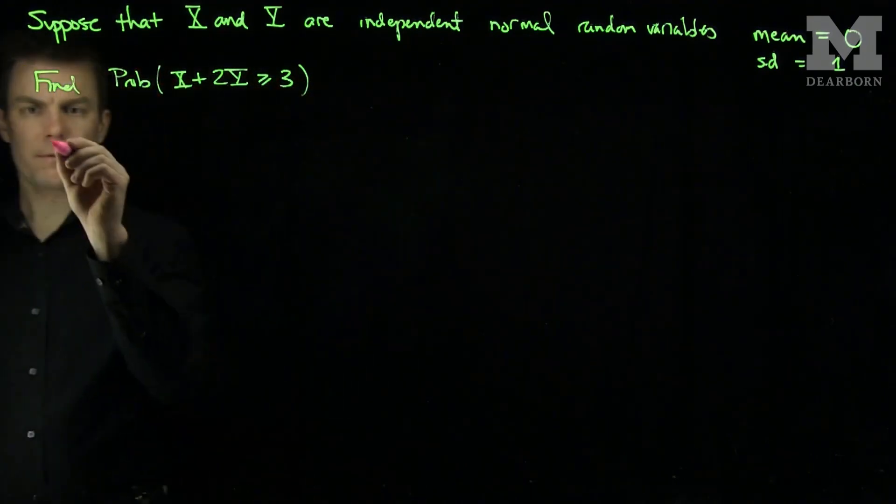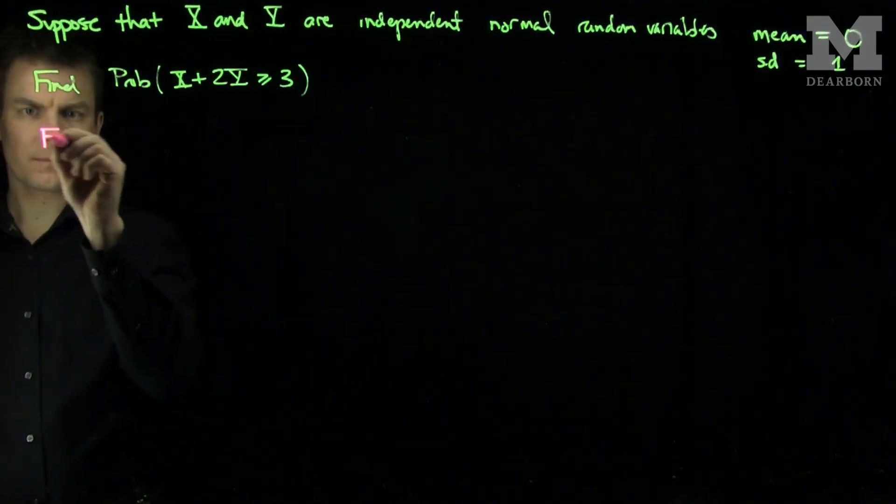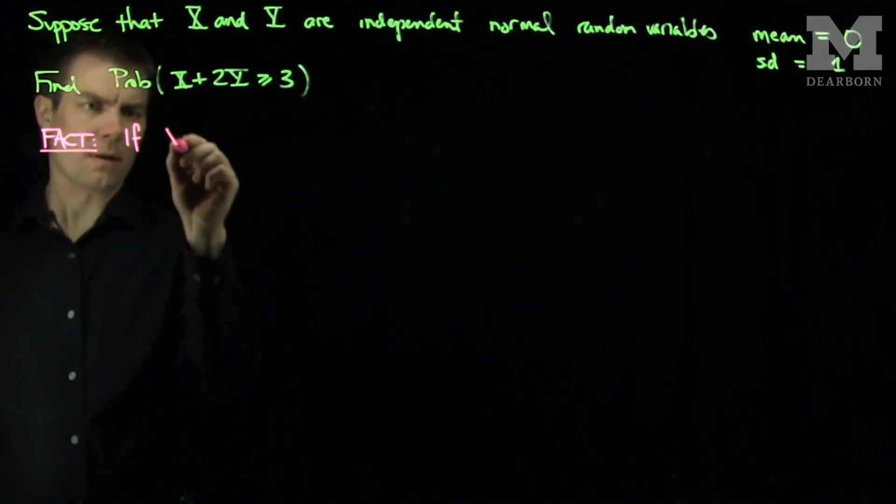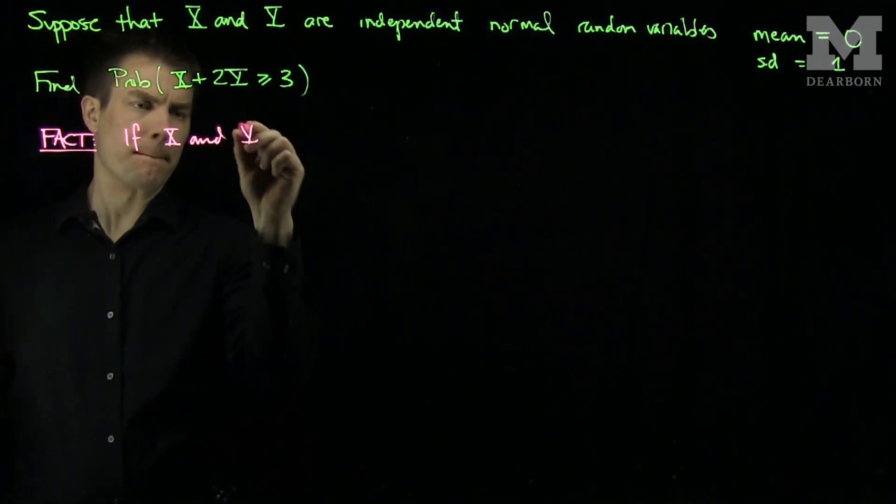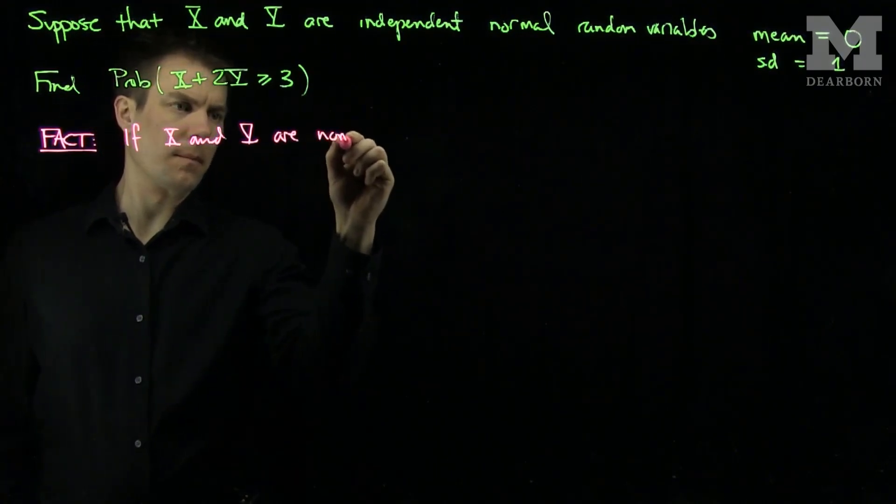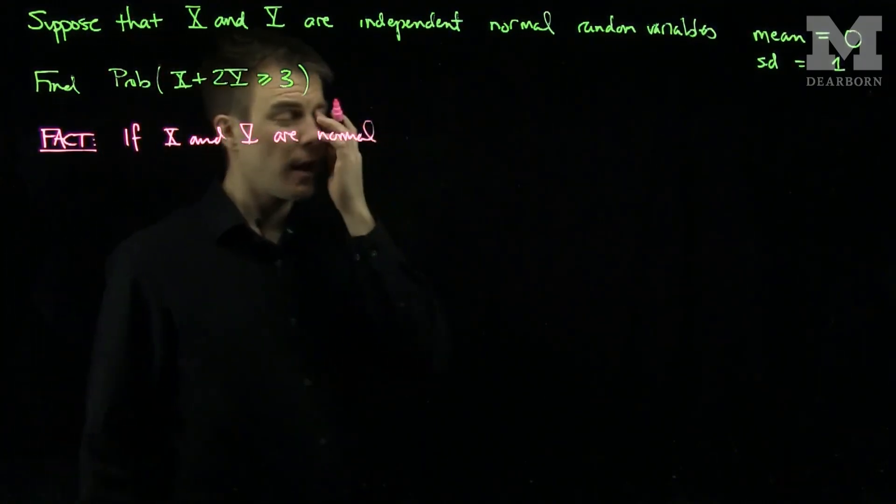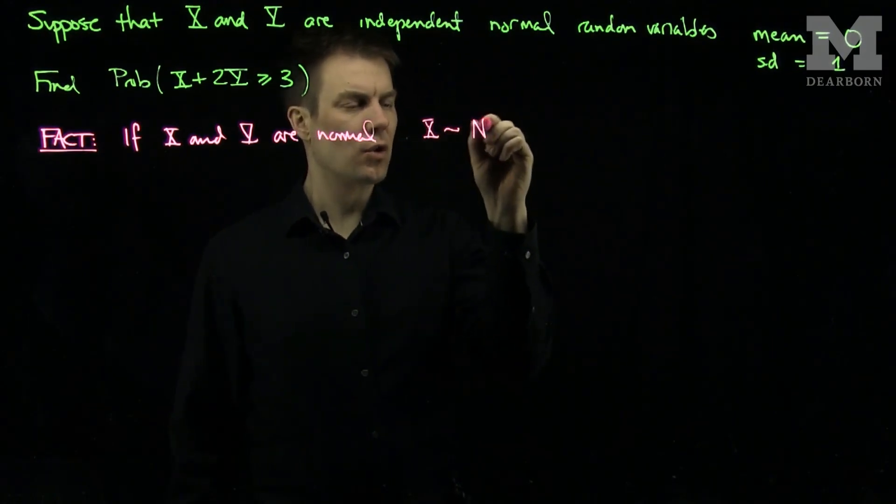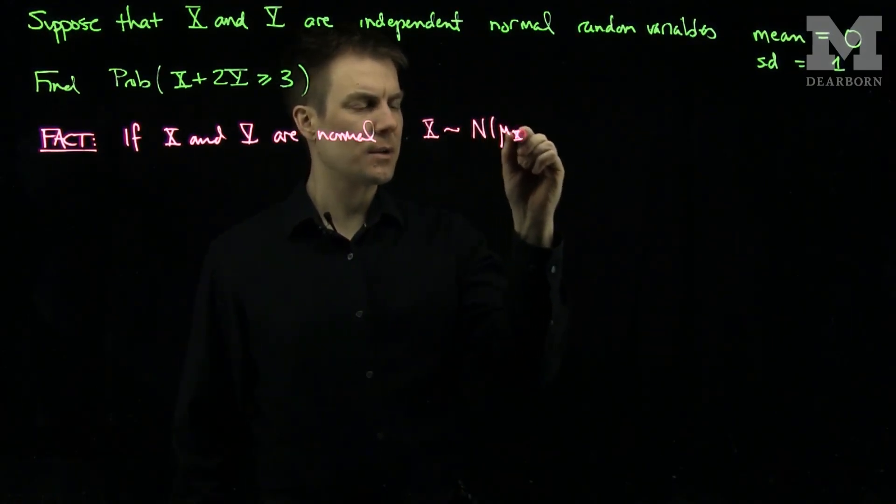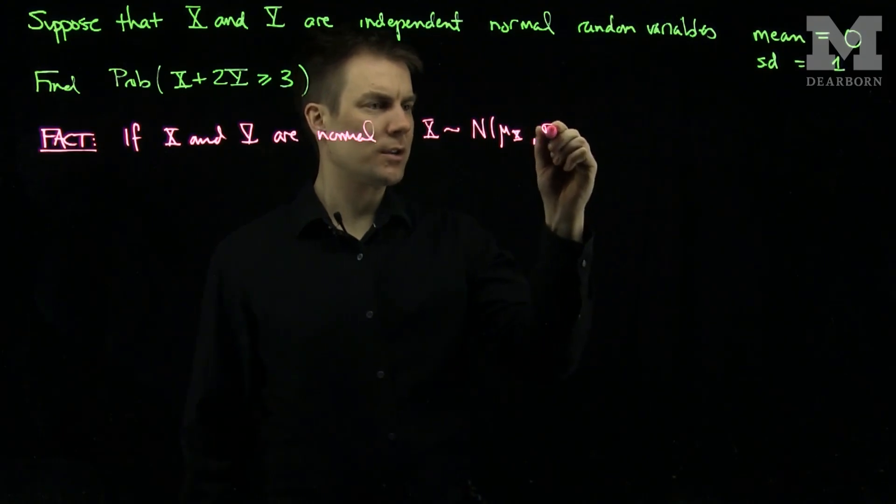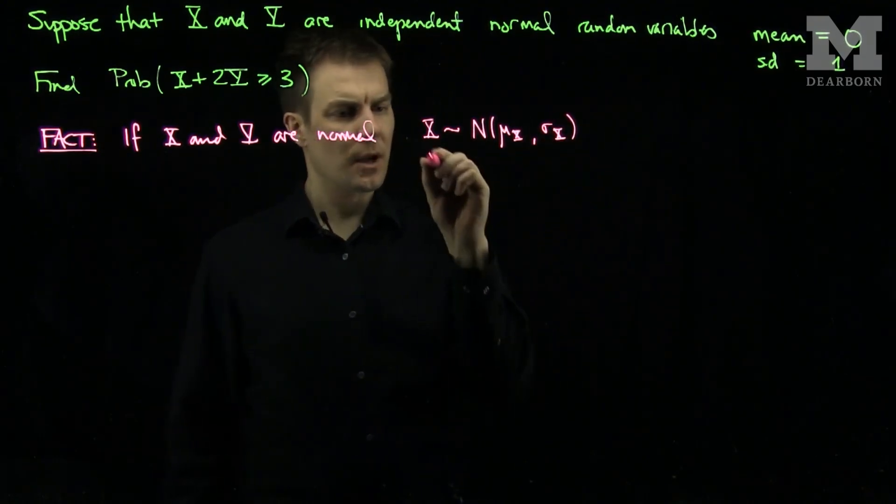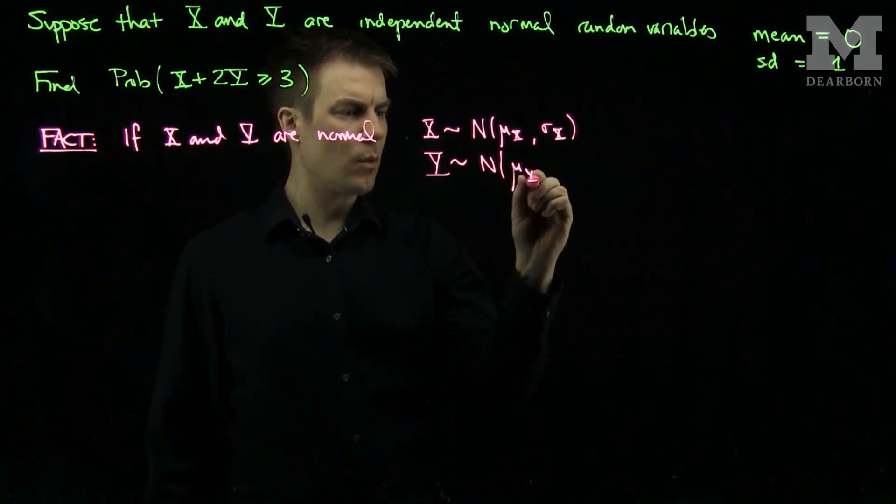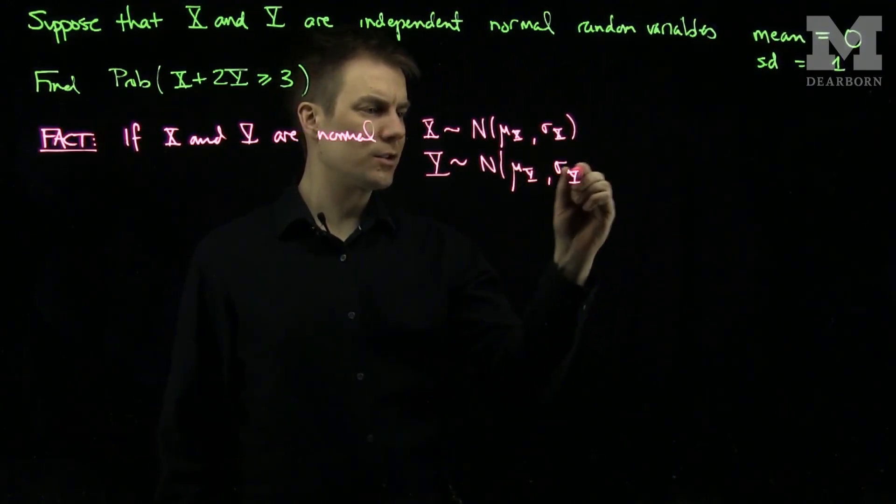If X and Y are normal, and let's say that X is normal with mean μₓ and standard deviation σₓ, and Y is normal with mean μᵧ and standard deviation σᵧ...